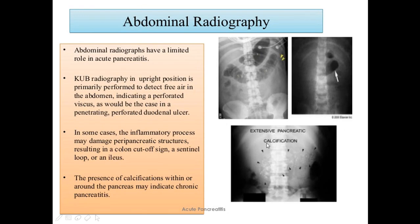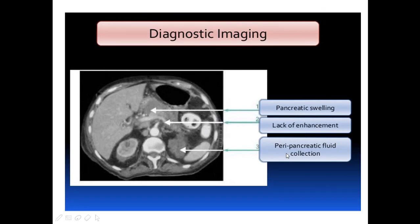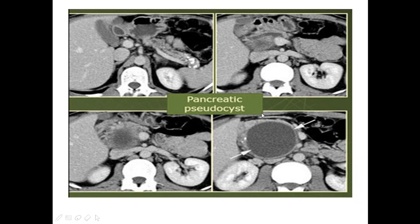This is the X-ray. As mentioned, it may show non-specific signs like colon cut-off sign and sentinel loop. This picture shows calcification in a case of chronic pancreatitis. This CT shows pancreatic swelling, lack of enhancement, and peripancreatic fluid collection. Also, this CT shows a pancreatic pseudocyst.